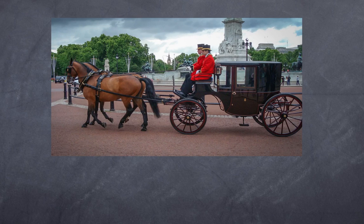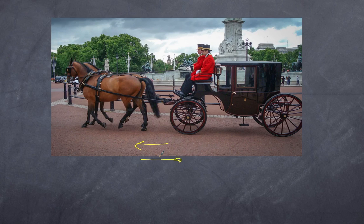We all know that the horse is applying a force onto the cart, and we know there's an opposite reaction force — the cart is applying a force on the horse — and the two are equal. So we have a force in one direction on the cart, and a force in the other direction on the horse. These two are always equal. The question then is: why does the horse and cart move? Don't they always cancel out?